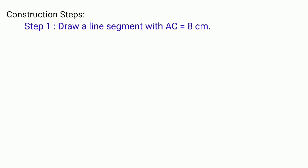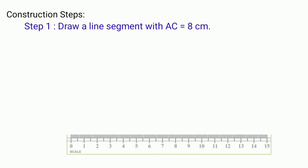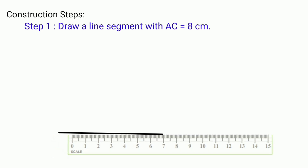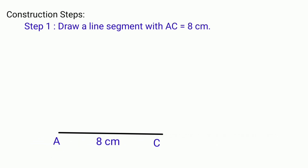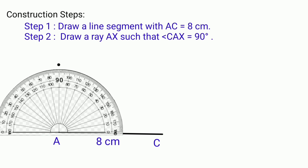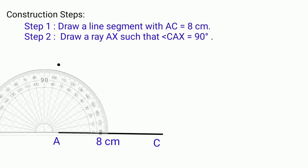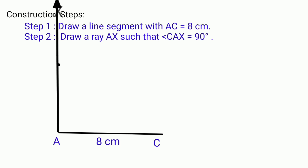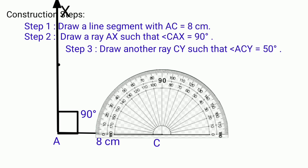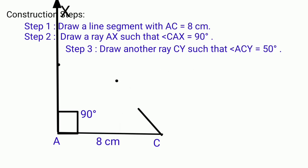Construction steps. Step 1: Draw a line segment AC equal to 8 cm. Step 2: Draw a ray AX such that angle CAX equals to 90 degrees. Step 3: Draw another ray CY such that angle ACY equals to 50 degrees.